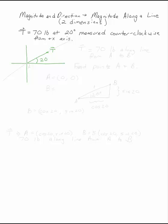We want to say that T is 70 pounds along the line from point A to point B, and we need to find points A and B.